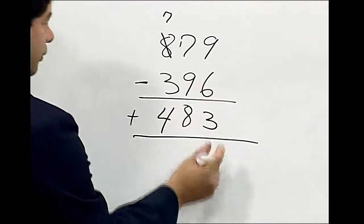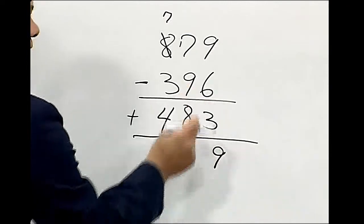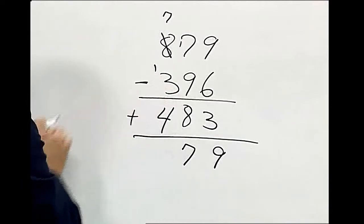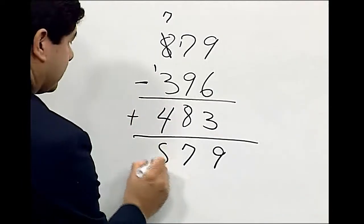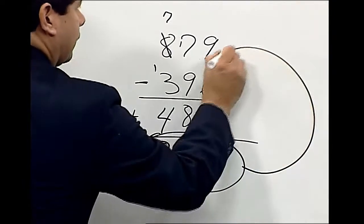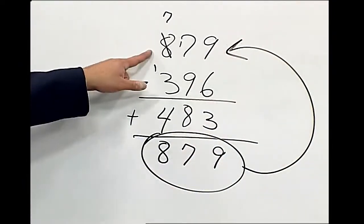We have six plus three is nine. Nine plus eight is 17. Carry the one. One plus three is four. Plus four is eight. And you can see that our sum is equivalent to what we came up with originally. So this is correct.